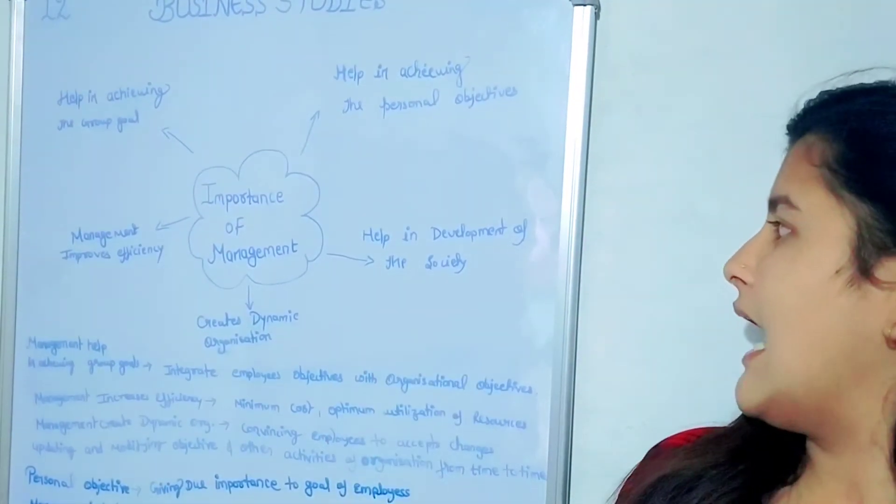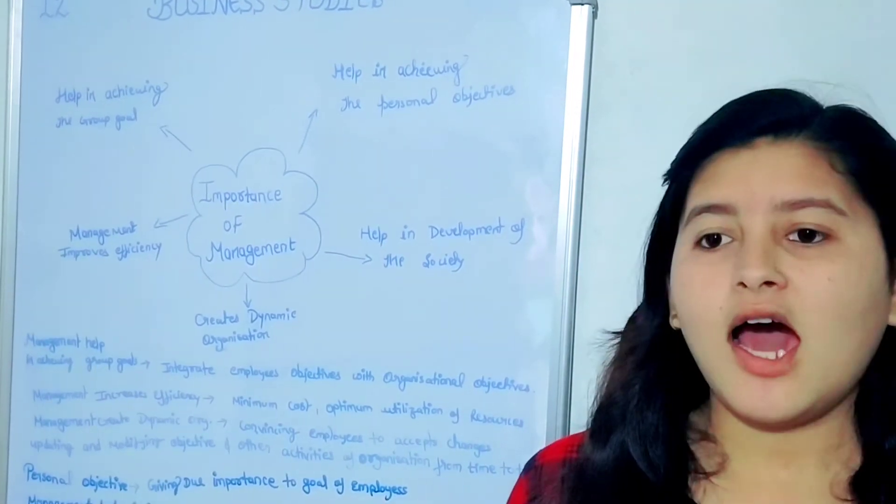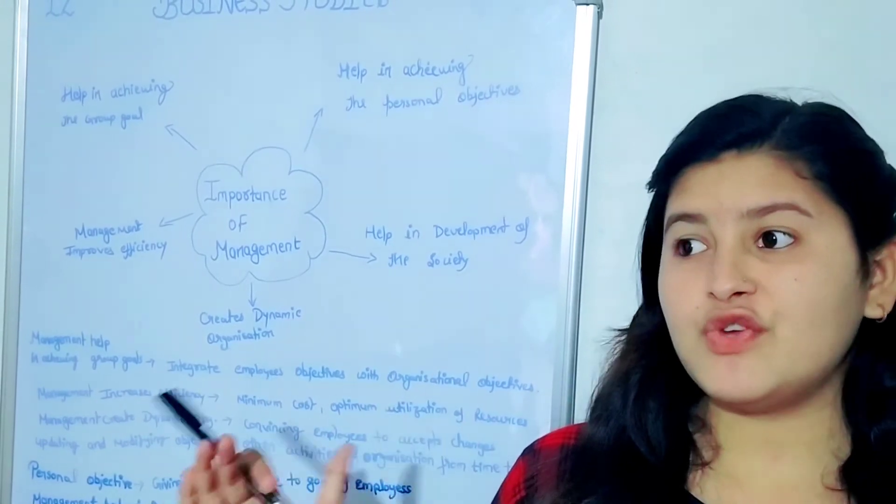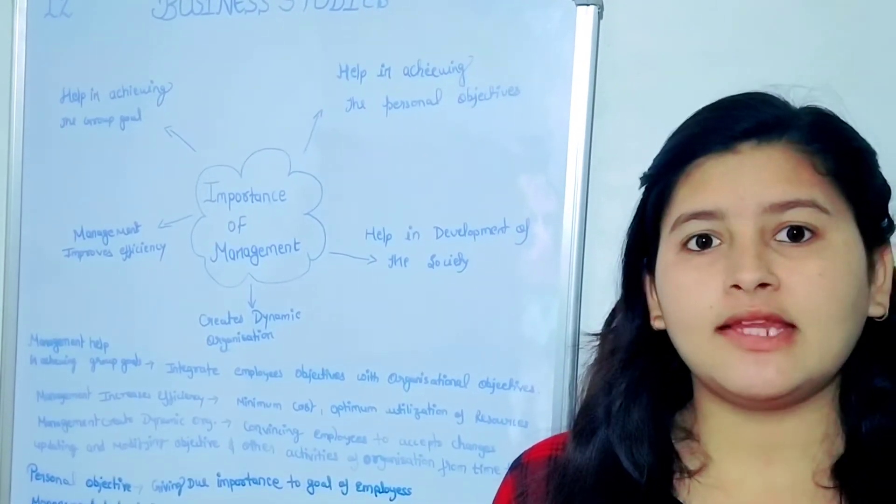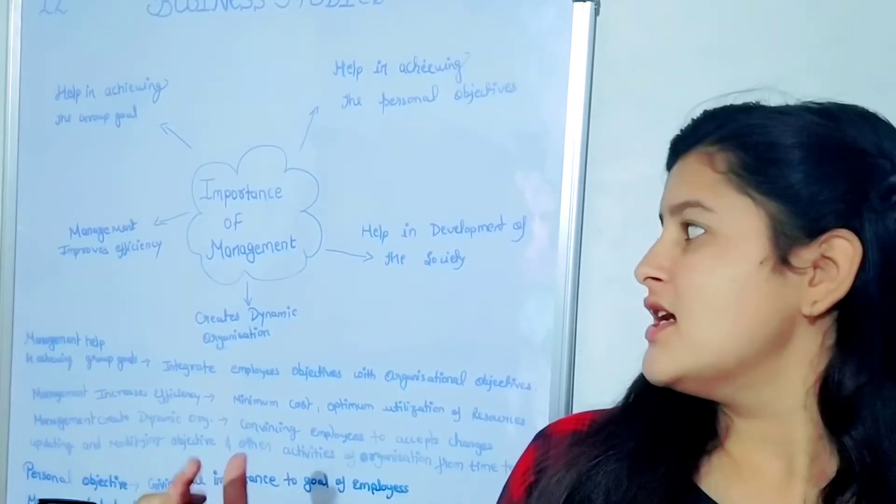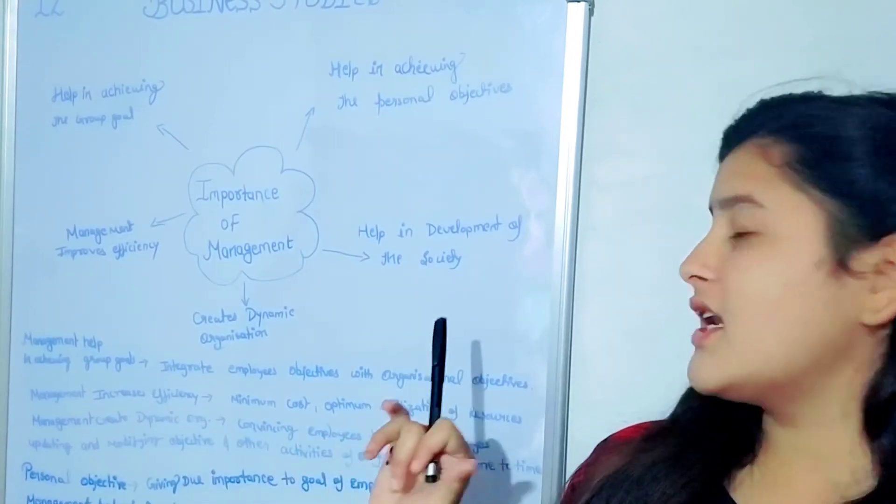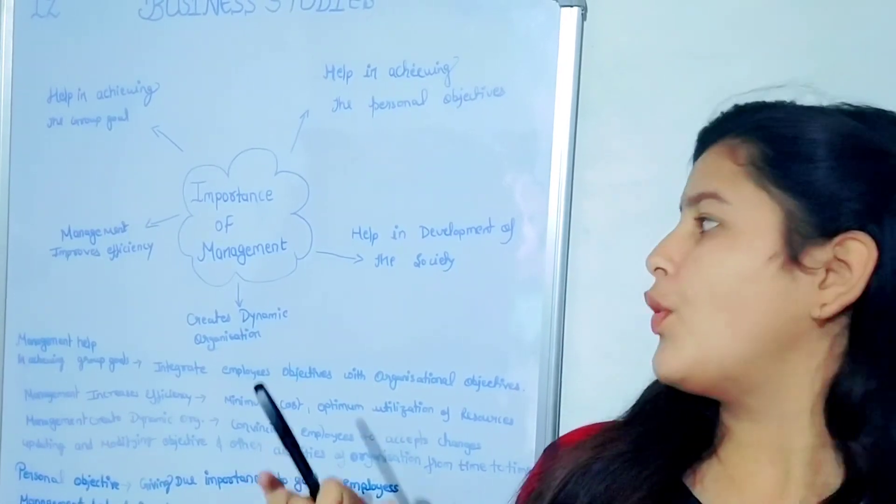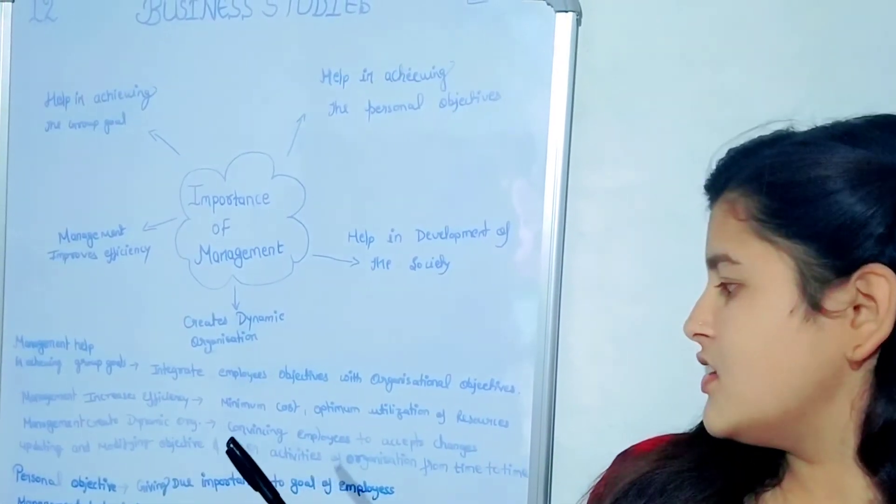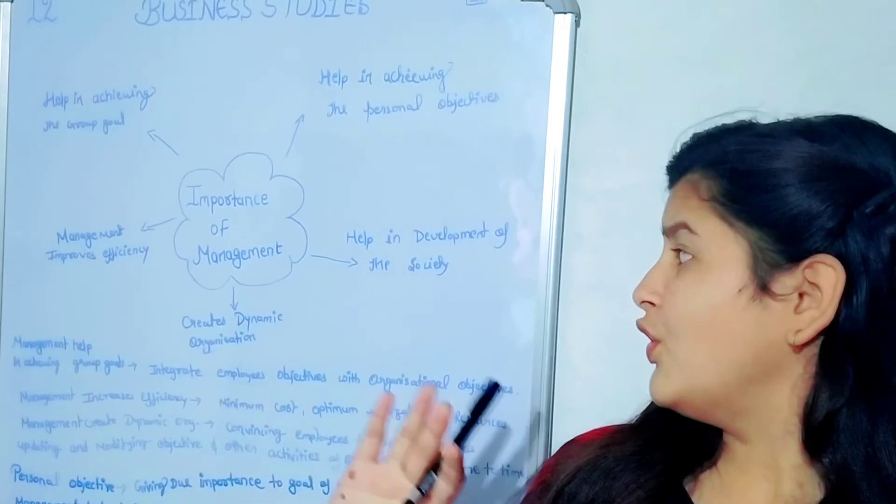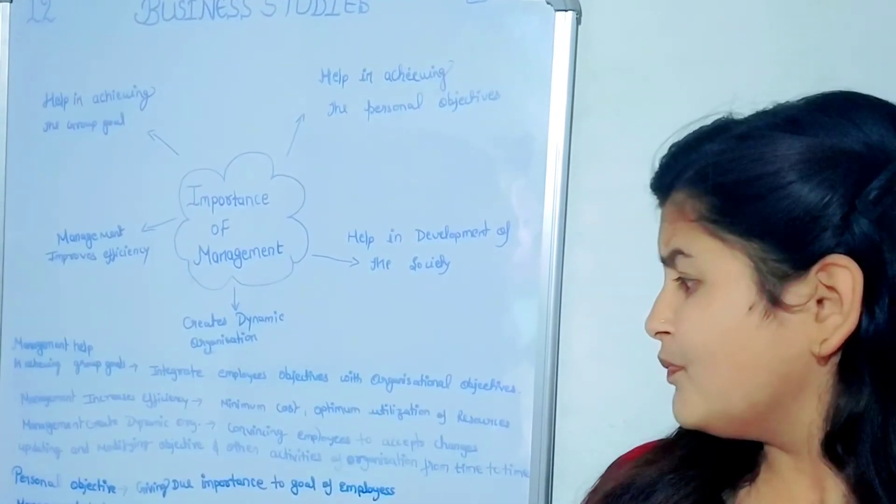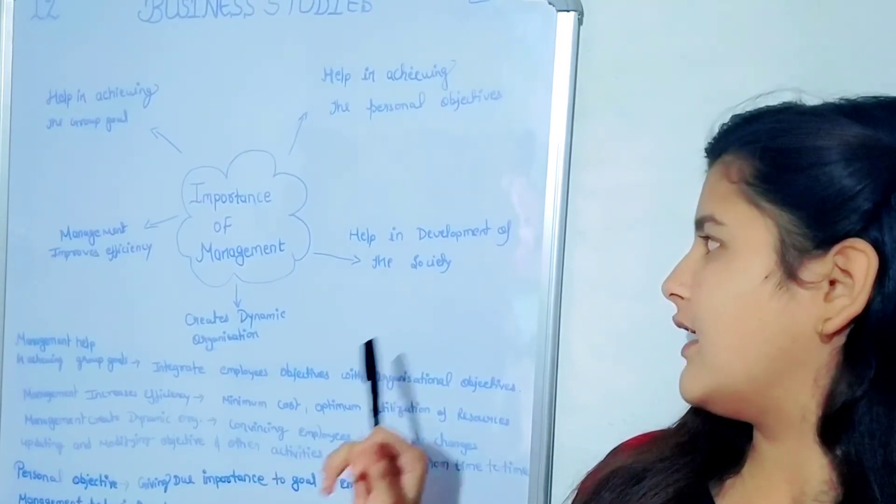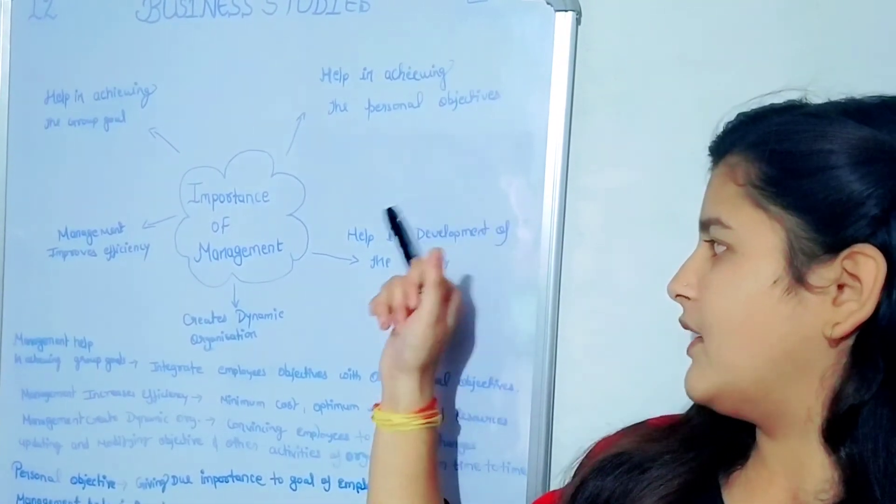Now coming to the next, help in development of the society. The organization has responsibility towards the society, means providing good quality products, providing healthy working conditions, having good coordination and relations with society, and providing education and training programs to the society. So it helps in the development of the society.